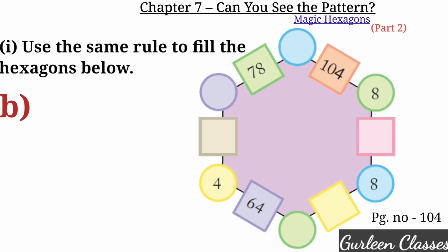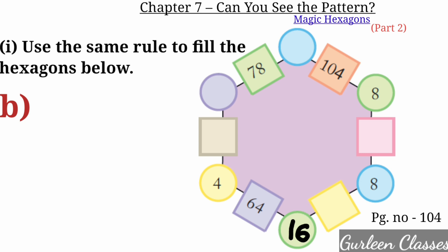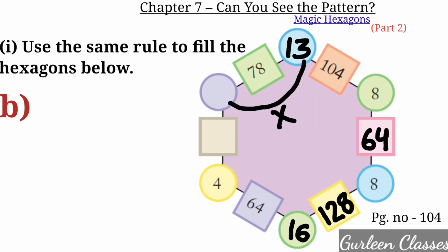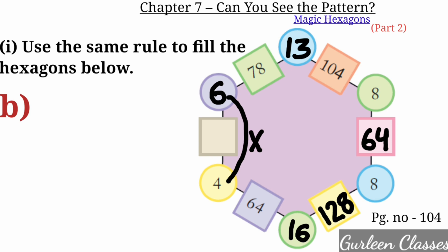Part B. In the circle it is written 4. 4 times 16 is 64. Then 16 times 8 is 128. Then 8 times 8 is 64. Then 8 times 13 is 104. Then 13 times 6 is 78. Then 6 times 4 is 24.